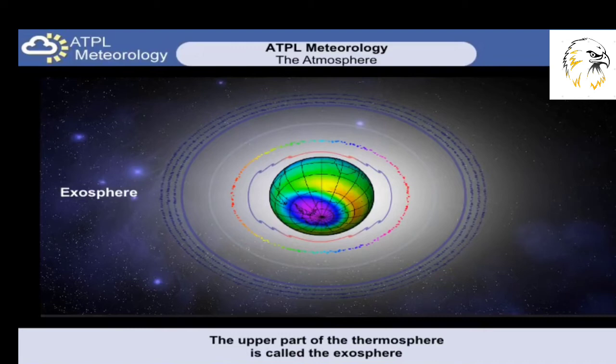The upper part of the thermosphere is known as the exosphere. This layer starts at 700 kilometers above the Earth's surface and is highly tenuous and undefined.